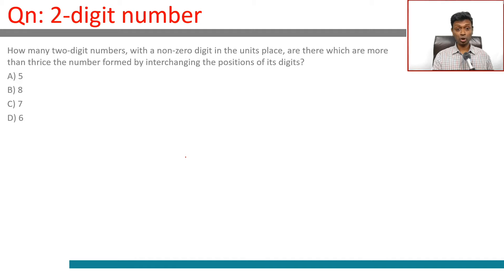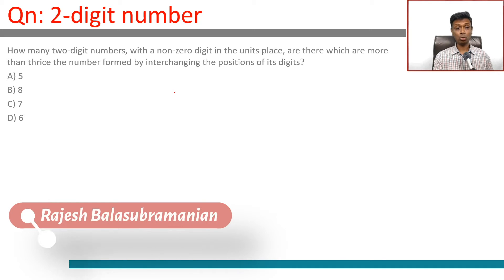How many two-digit numbers with a non-zero digit in the unit's place are there which are more than thrice the number formed by interchanging the positions of these digits?